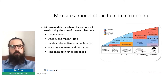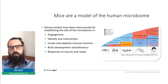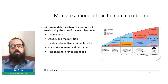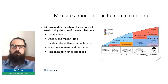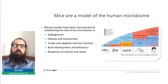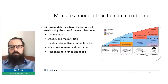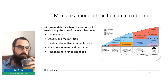For these reasons, mouse models have been used to study the role of the microbiome in angiogenesis, obesity, immune function, brain development and behavior, and responses to injury and wound healing. These are some of the important areas where mouse microbiome research has proven useful.